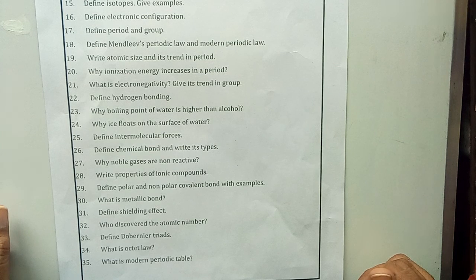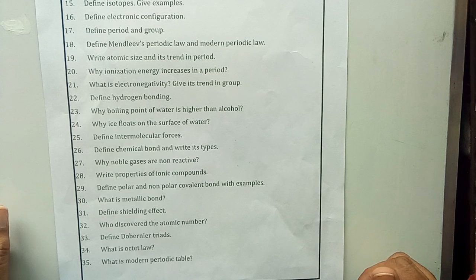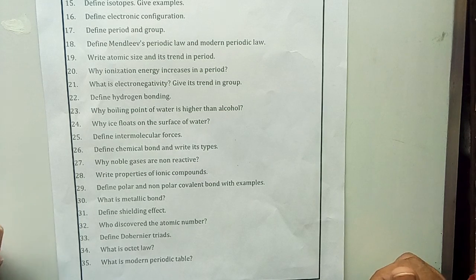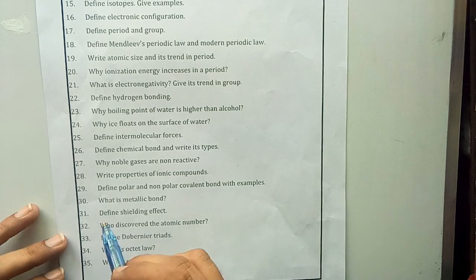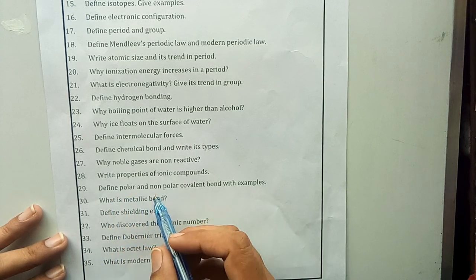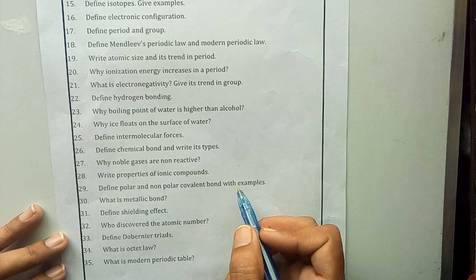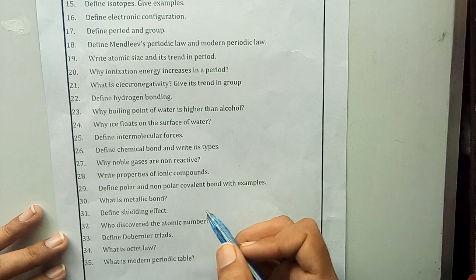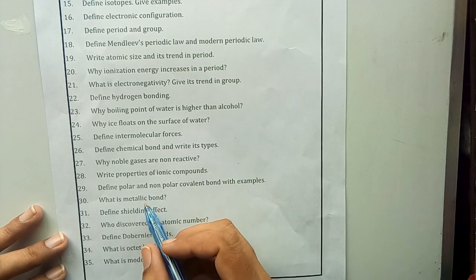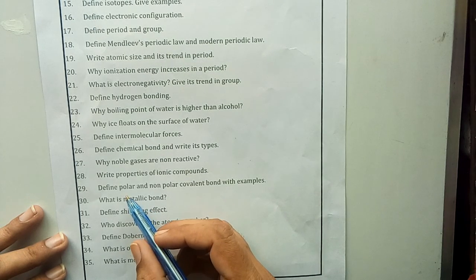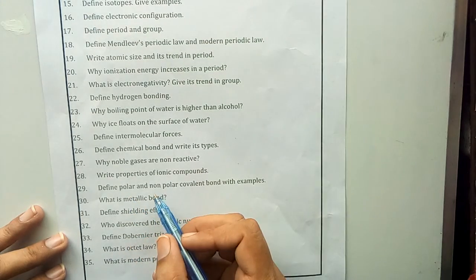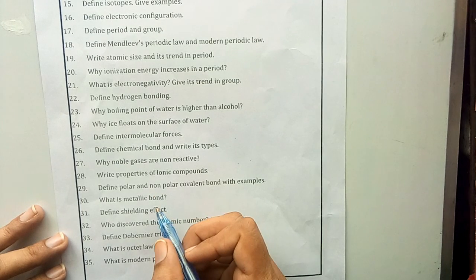Students, at this page we have to solve the lessons that you have to learn and write on the loose sheet. We start from question number 29: Define polar and non-polar covalent bond with examples. You have to define the terms polar bond and non-polar covalent bond.